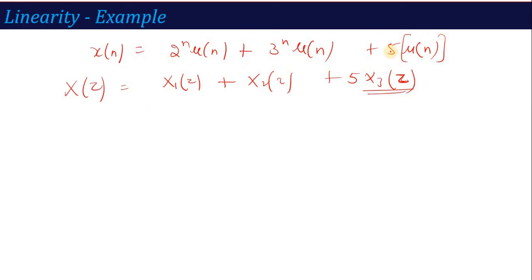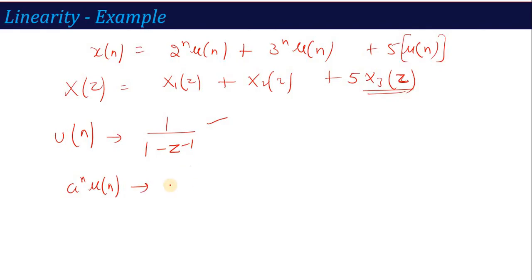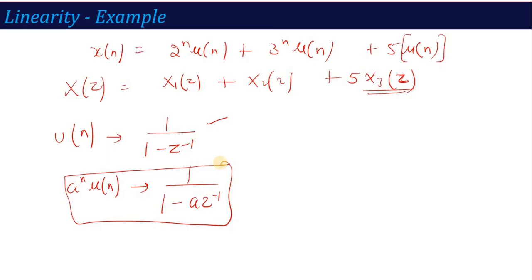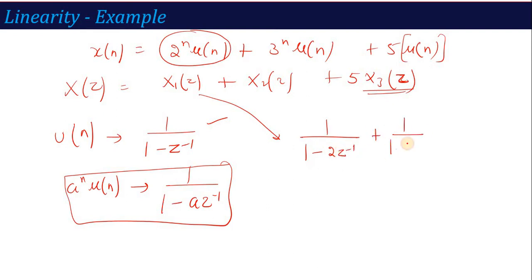The basic use of these three: a^n * u(n) — we already calculated that its Z-transform is 1/(1 - a*z^(-1)). This is calculated in the first lecture of this unit. So comparing: 2^n * u(n) gives 1/(1 - 2*z^(-1)), and 3^n * u(n) gives 1/(1 - 3*z^(-1)). So the answer is 1/(1 - 2*z^(-1)) + 1/(1 - 3*z^(-1)) + 5/(1 - z^(-1)).